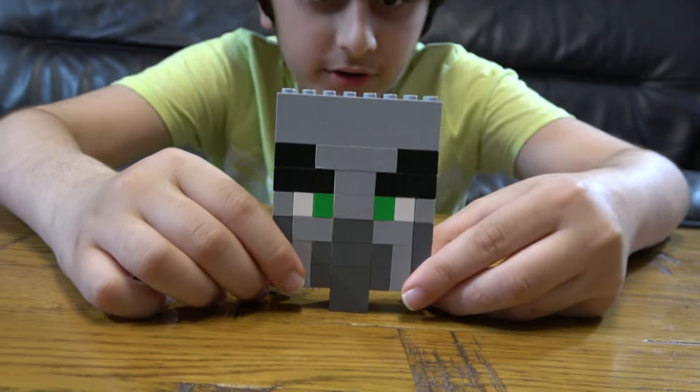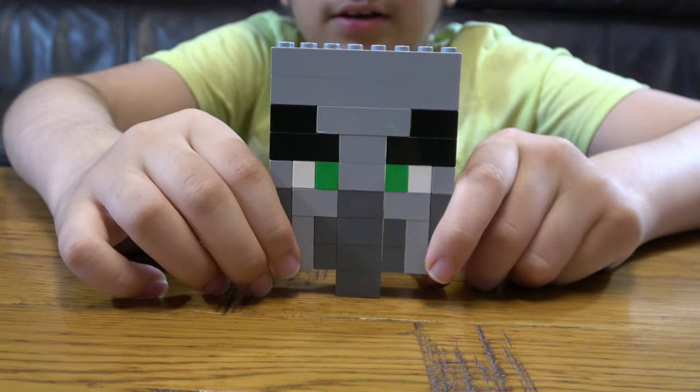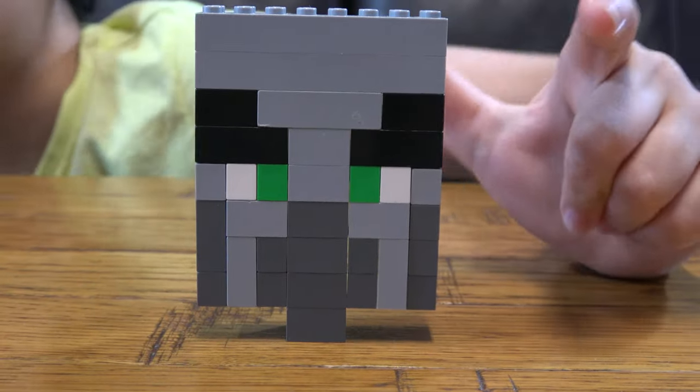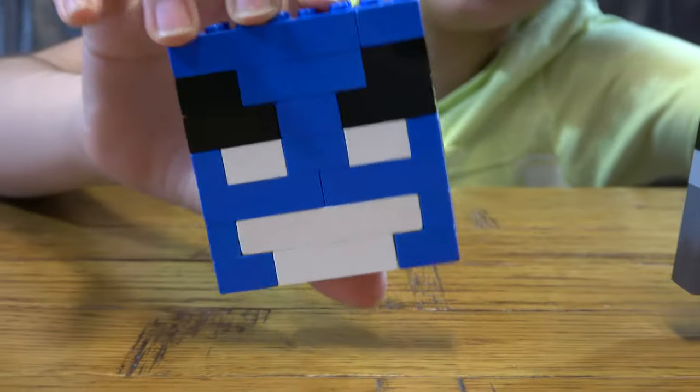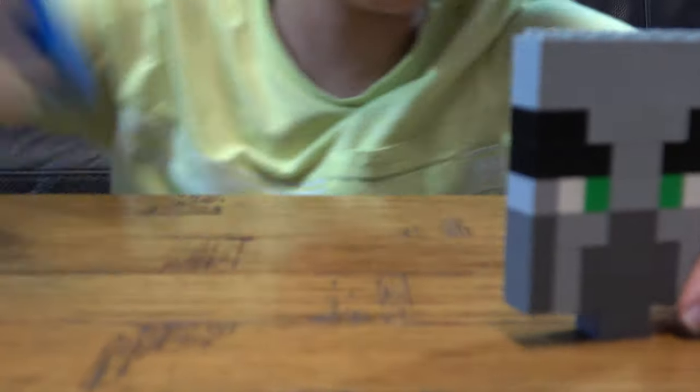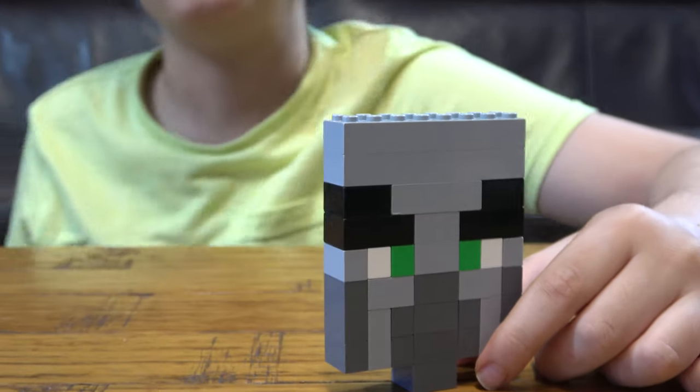An Evoker is like a villager wizard that summons little annoying creatures that kind of look like this, because this is the Vex head. They summon Vex. And also it's not the right color blue because it's slightly whitish blue.